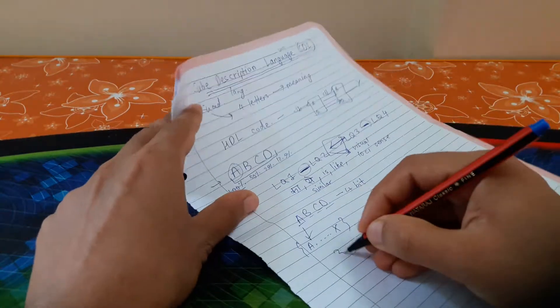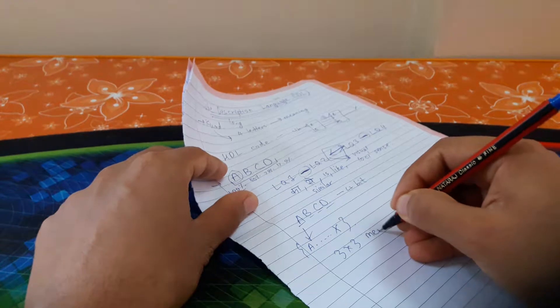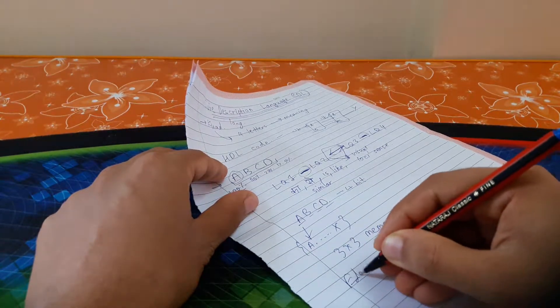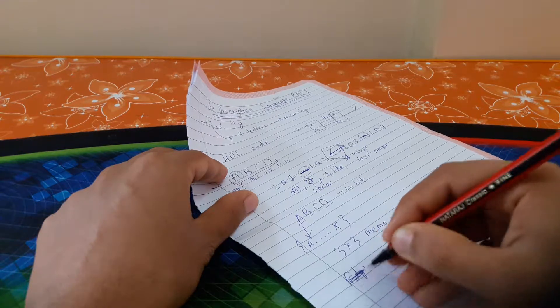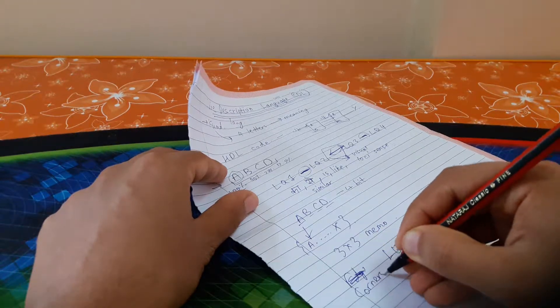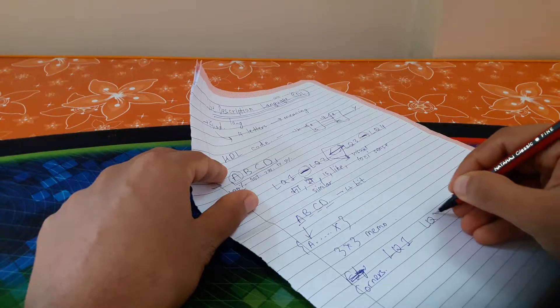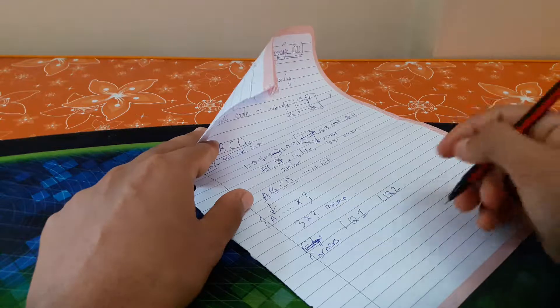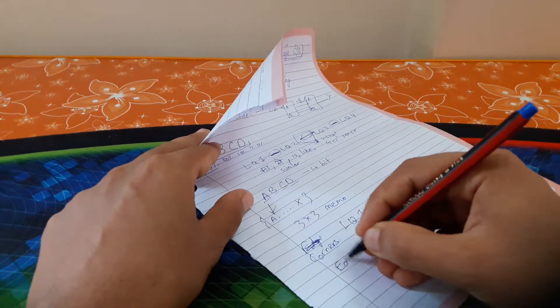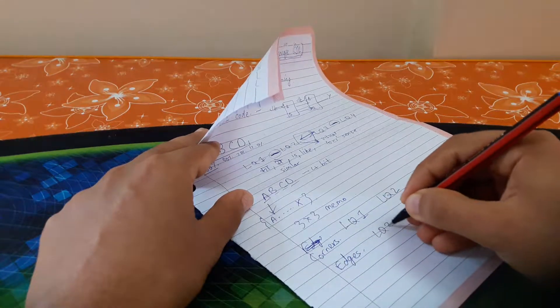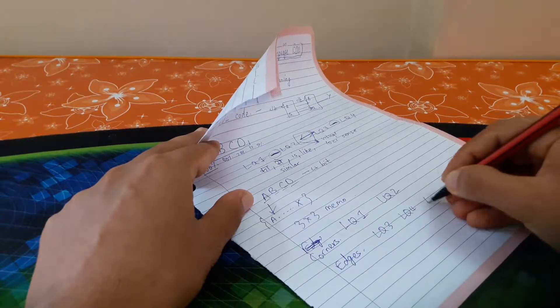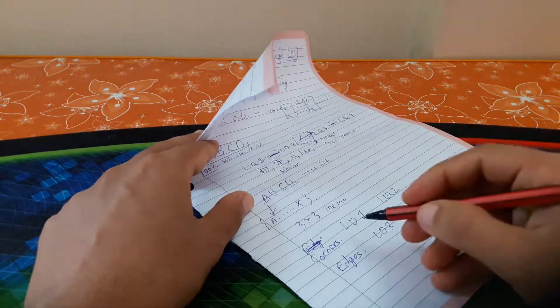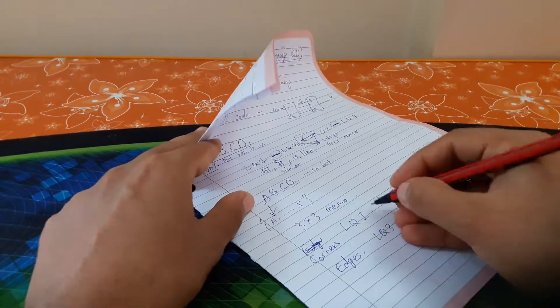If I have a 3 by 3 memo, then letter quad one for edges if I memo first, letter quad two for corners. Let's hope the corners are resolved here and it's not that hard of a scramble and there's not a third letter quad. Then letter quad three, four, five. Mostly there will be only five letter quads to memo the entire cube.